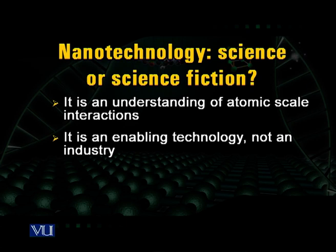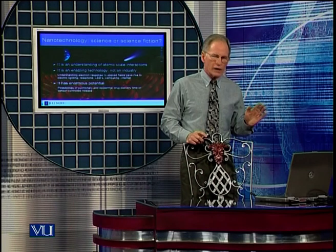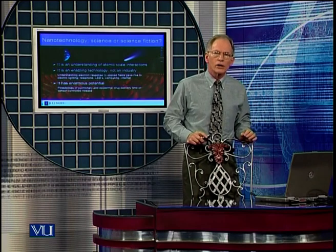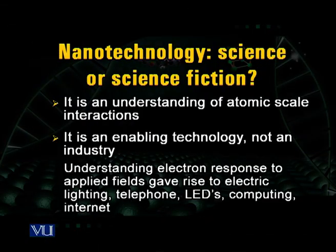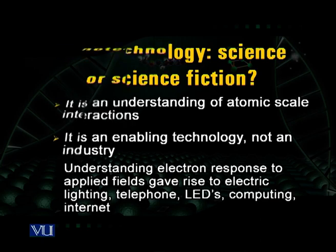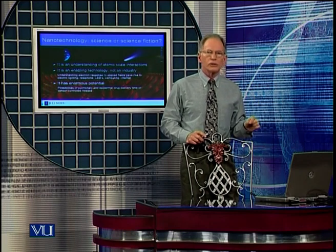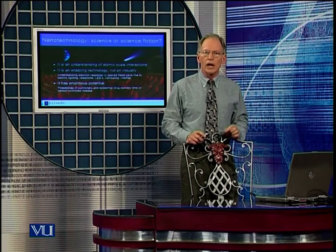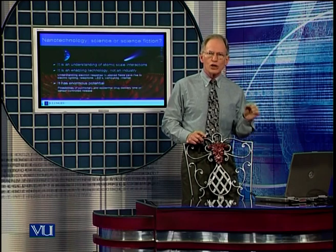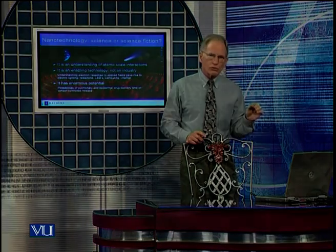Nanoscience is an enabling technology, not an industry. An industry would be the automobile industry — nanoscience is not going to replace it; instead, the automobile industry will use nanoscience and nanotechnology, and already does, in making their products. An analogy would be understanding the flow of electrons in an applied electric field. Those problems were faced by the scientific community a century ago, and we learned to understand how to manipulate charge. From that understanding, we could make resistors, then transistors, then devices, then the internet, and everything around it — it's an understanding of a process used in a wide variety of applications.